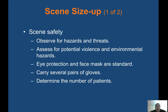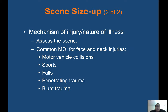Scene size-up: every call, scene safety — observe for hazards and threats, assess for potential violence and environmental hazards. Call for PD if not already en route. If you feel unsafe, retreat back to the ambulance and call for PD. Eye protection and face mask are standard. Carry several pairs of gloves. Determine the number of patients and ask for more resources if you need them. Mechanism of injury and nature of illness — have a high index of suspicion for trauma patients. Common MOI for face and neck injuries: motor vehicle collisions, sports, falls, penetrating trauma, and blunt trauma.